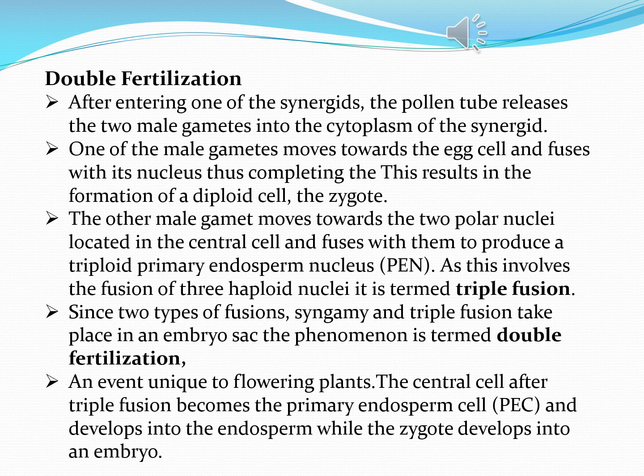In this slide we are going to focus on double fertilization. Through different methods, the pollen tubes enter into the ovule and reach the synergid cells. The pollen tube enters into the synergid cells where it releases its two male gametes into the cytoplasm of the synergid cells. After entering the ovule, the pollen tube reaches the embryo sac, which consists of different parts including the egg apparatus and synergid cells.